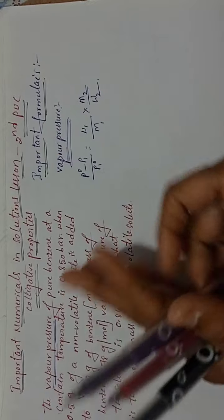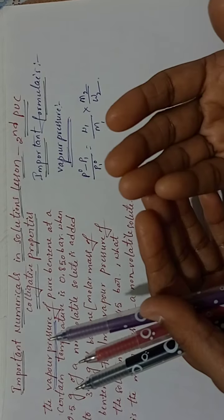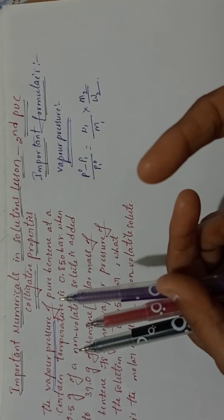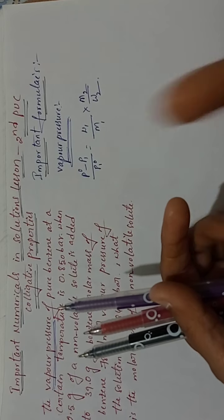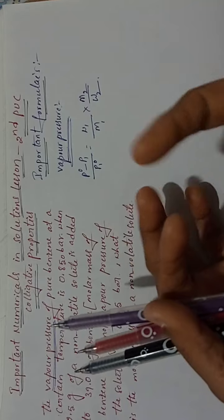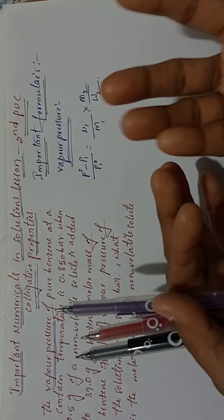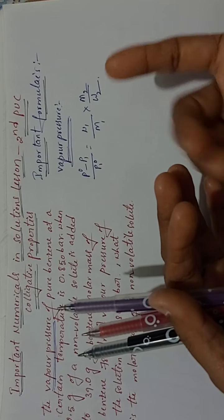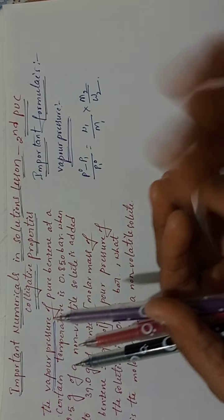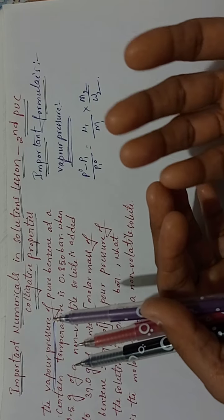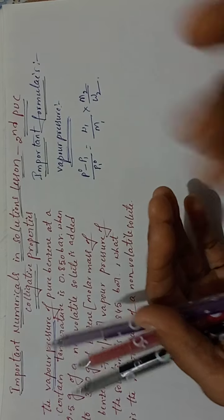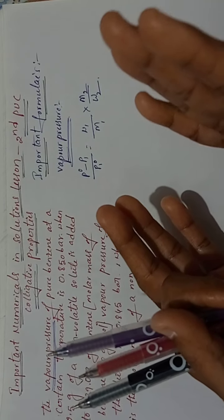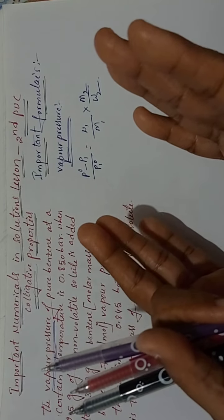We know that the four colligative properties are: relative lowering of vapor pressure, elevation of boiling point, depression of freezing point, and osmotic pressure. In today's session I am going to discuss problems on the first two colligative properties.